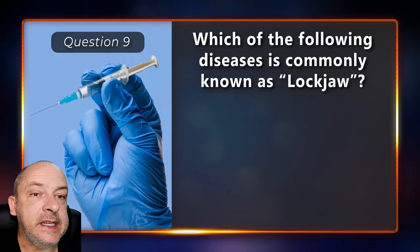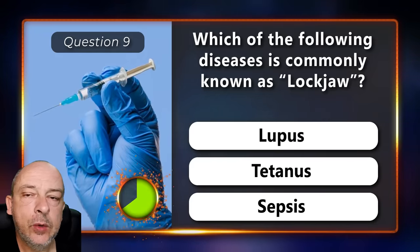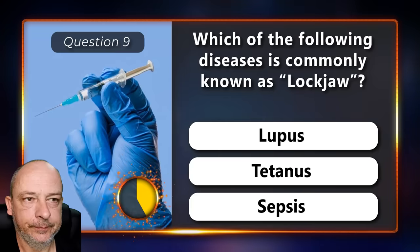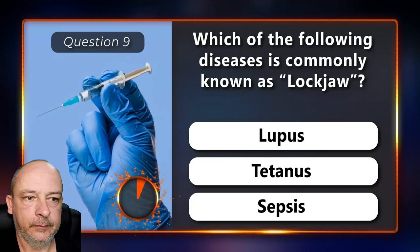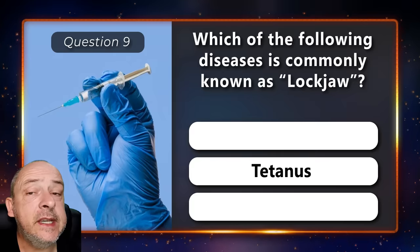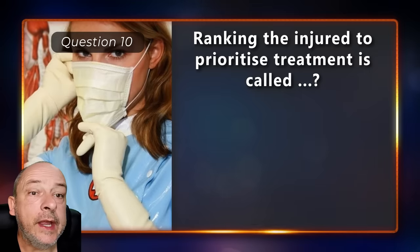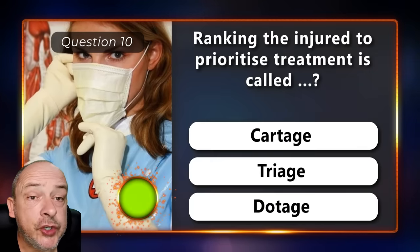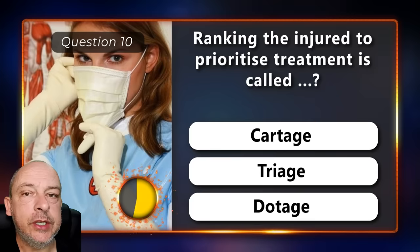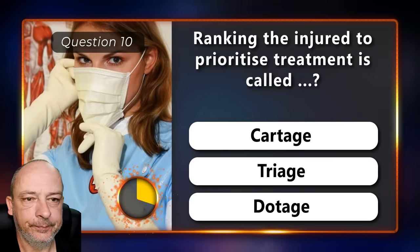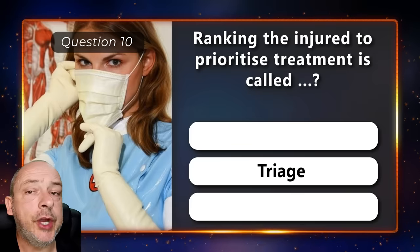Which of the following diseases is commonly known as lockjaw — lupus, tetanus, or sepsis? The right answer is tetanus. Ranking the injured to prioritize treatment is called cartage, triage, or dotage? It's called triage.